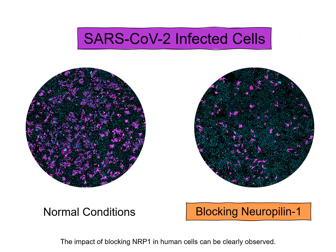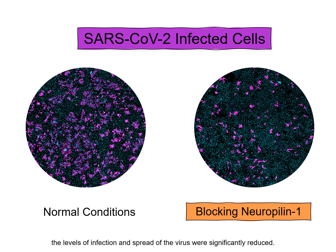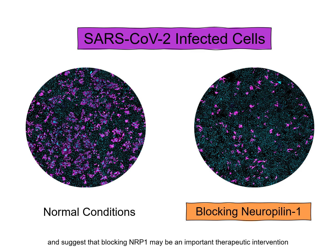The impact of blocking Neuropilin-1 in human cells can be clearly observed. When cells were treated with a drug or an antibody blocking this interaction, the levels of infection and spread of the virus were significantly reduced. Together, these results implicate Neuropilin-1 as an important host factor for SARS-CoV-2 infection, and suggest that blocking Neuropilin-1 may be an important therapeutic intervention in the treatment of COVID-19.